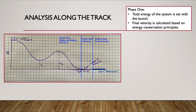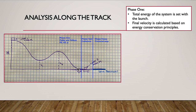In phase one, the launch point sets your total energy. When the cart is at rest up there, all the energy is potential energy. That value is your maximum total energy for the entire ride — it doesn't change. As the cart moves, you can calculate potential energy from height, and since total energy equals kinetic energy plus potential energy, the difference gives you kinetic energy. Using conservation of energy throughout, you'll arrive at a velocity at the end of phase one.